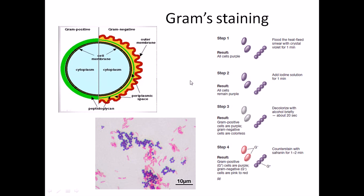Gram staining is based on the structural morphology of the bacteria, especially the morphology of the membrane and cell wall. There are two kinds of bacteria: one kind having two layers surrounding the cytoplasm — an inner cell membrane and an outer cell wall made of peptidoglycan, which is different from a phospholipid membrane. This thick peptidoglycan layer is very rigid and provides the cell huge structural rigidity.